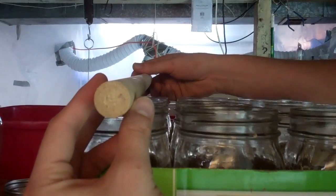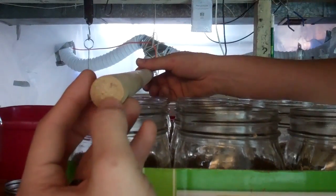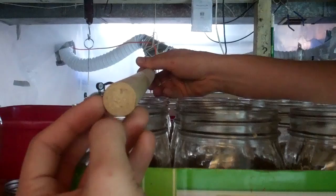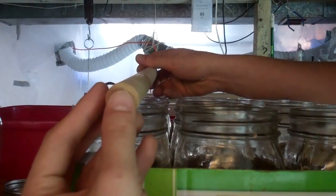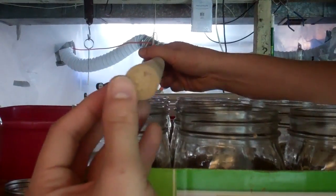But when I use this dowel rod, the vertical column it creates holds enough spawn that it takes the jars right about three and a half to four weeks to fully colonize.